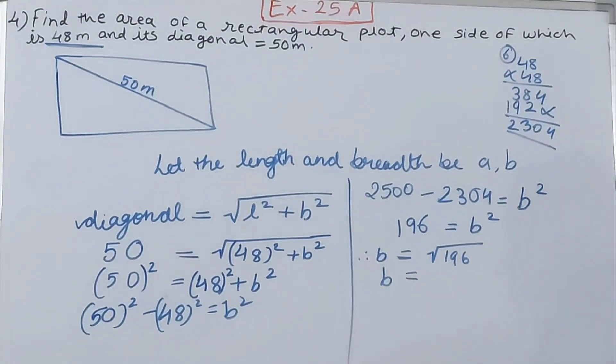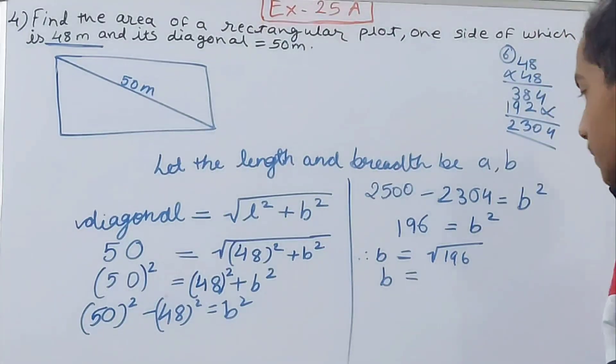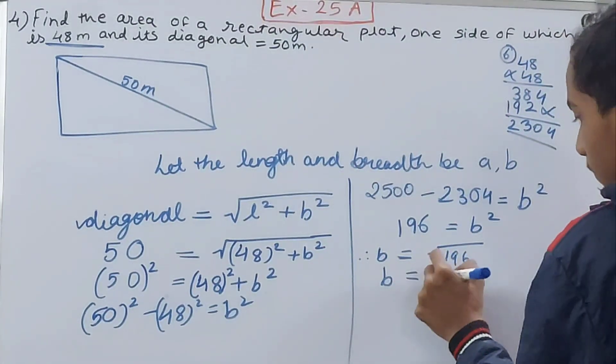That is 14², it is 196, 14 into 14 is 196. So here also b is equal to 14 meters.